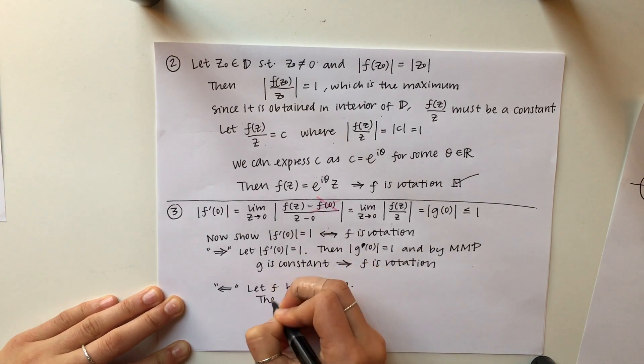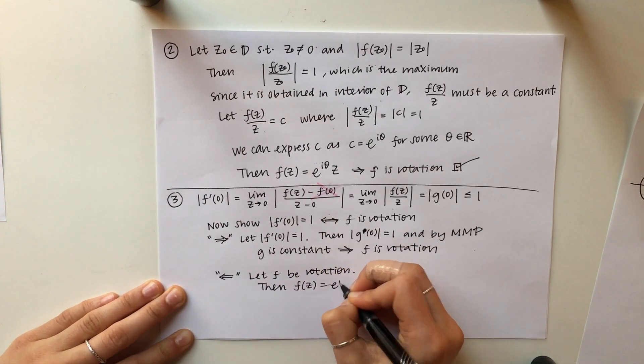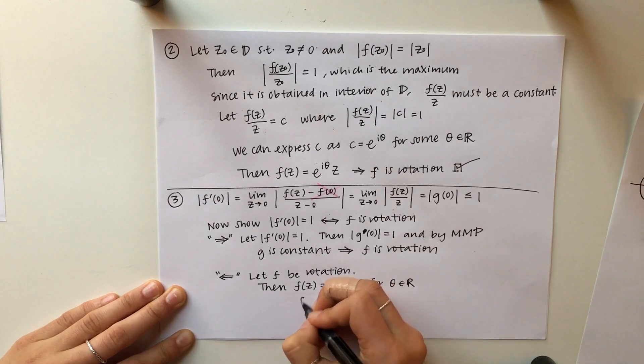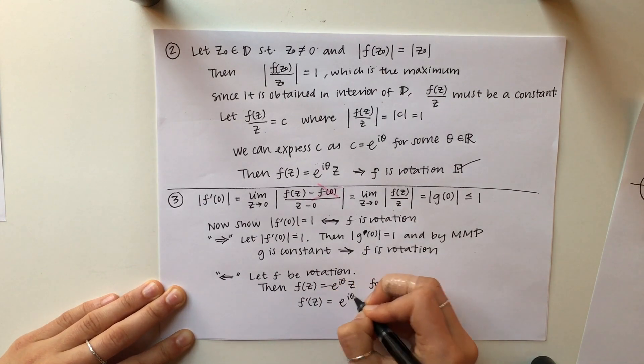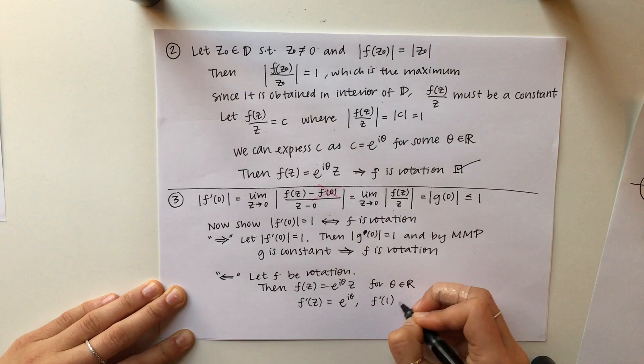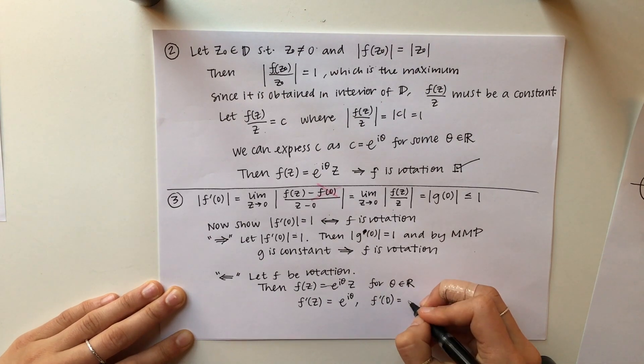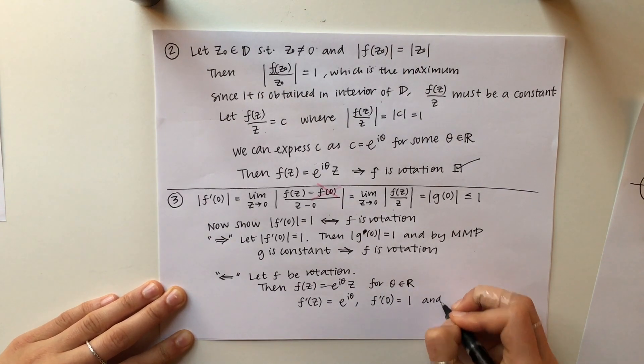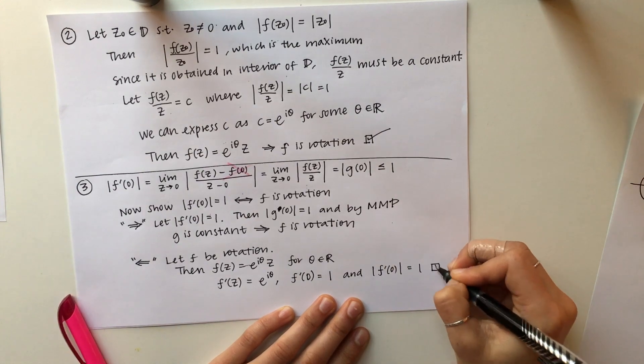Now we're going to prove the other way. If F is a rotation, then we can rewrite F of Z as e to the i theta times Z. We'll take the derivative, we'll plug in 0, take the modulus, and that concludes our proof for Schwartz Lemma.